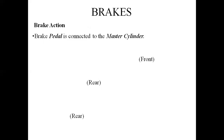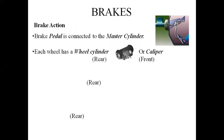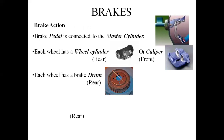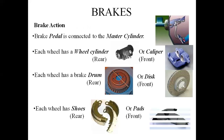The brake action begins at the brake pedal, which is connected to the master cylinder. Each wheel has a wheel cylinder — rear and front. The master cylinder is attached to the rear as well as to the front caliper. Each rear wheel has a drum and shoe, and the shoes are attached to the inner periphery of the drum. Pads are attached to the disc for the front wheel.